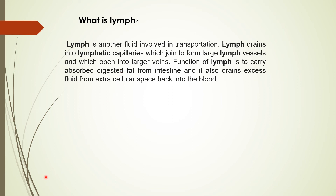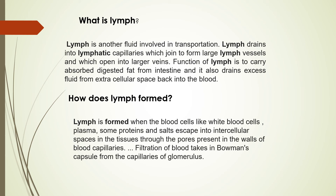How does lymph form? There are two types of vessels — arteries and veins — and whenever there is an exchange of substances between them, the capillaries present have intercellular pores. Through these pores there is leakage of fluid, and that fluid contains blood cells, plasma, proteins, and salts. That fluid comes through those pores into the intercellular space between the blood cells, and that filtered fluid is the lymph. You should remember that lymph is similar to plasma blood, but it is colorless and contains less protein.